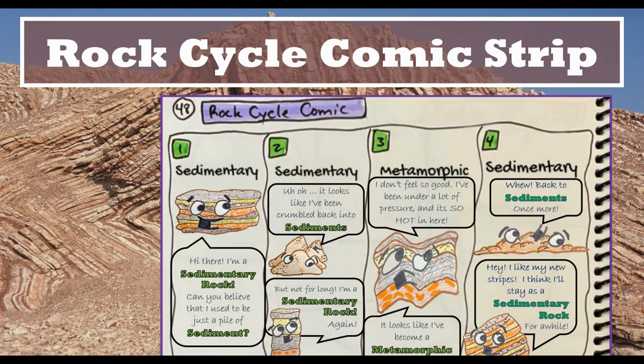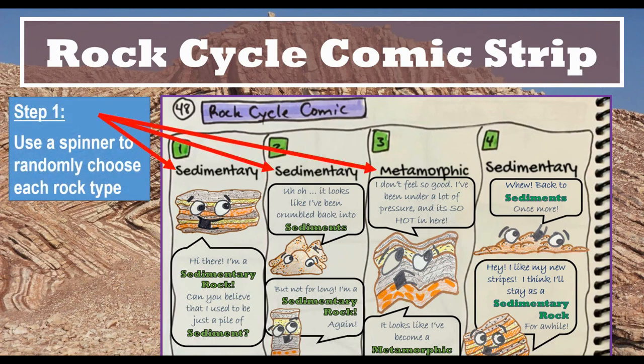There are two steps involved in making your own comic strip. Step one, we are going to use a spinner to randomly choose each of the four rock types that your comic strip will contain.